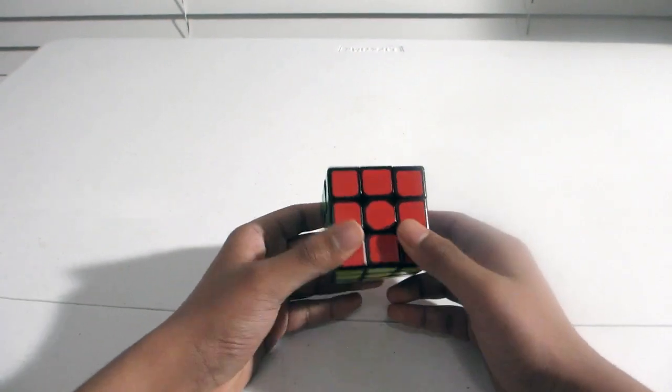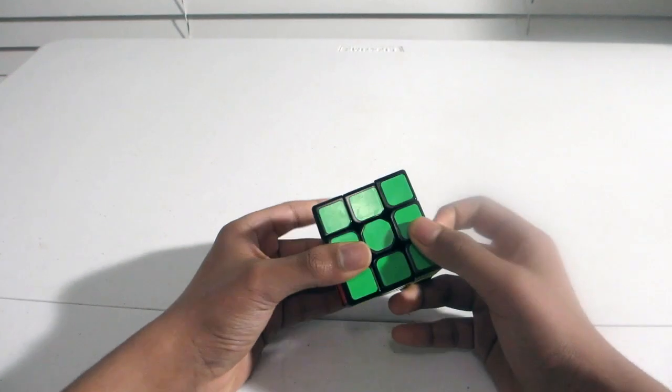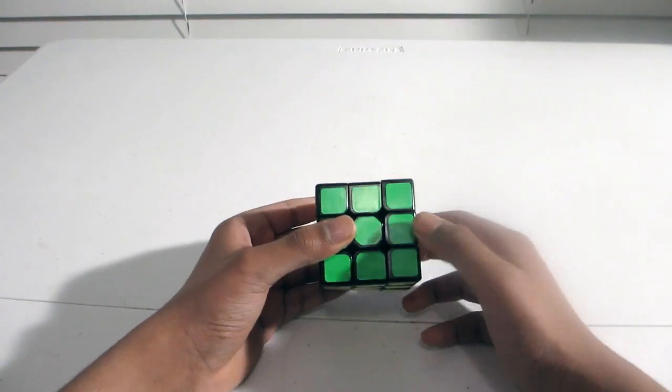And to do this, there's basically just an algorithm that you have to follow, and if you do it correctly, you'll have three sides unsolved.